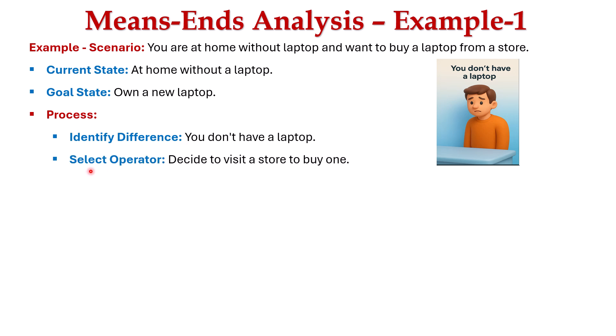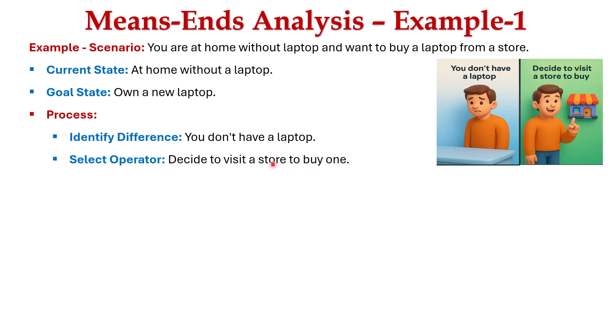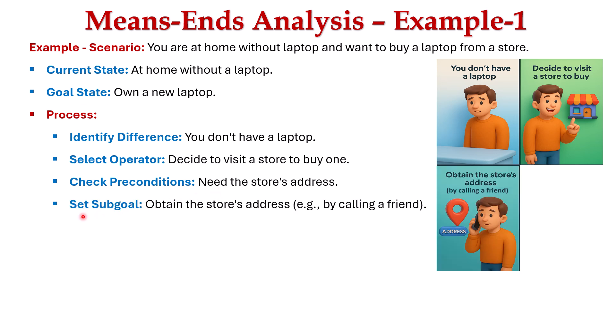The next step is to select the operator — you decide to visit a store to buy a new laptop. Then we check the preconditions: we don't know the address of the store where to buy the laptop, so we need to resolve this first. This creates a sub-goal: obtain the store's address by calling a friend. We make a call to a friend and ask for the address of the shop. Now the sub-goal is complete and we know where to buy a laptop.